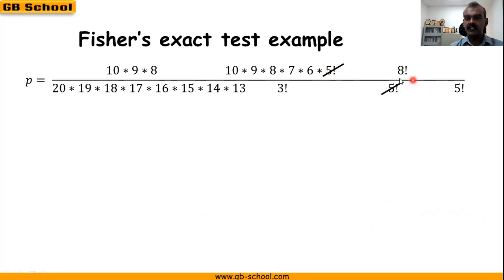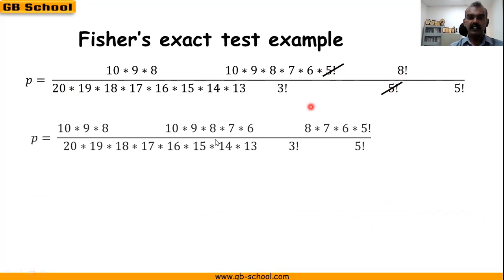The next highest factorial is 8! in the numerator and 5! in the denominator. So 8! is expanded as 8 × 7 × 6 × 5!, and this 5! cancels with the remaining 5! in the denominator.